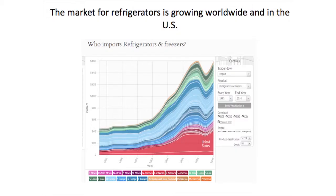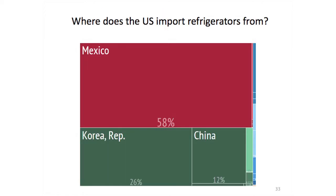That's an interesting industry for Guatemala because it can help them move up. The freezer market is growing, and the U.S. — a neighbor — is the biggest and also growing market. We can even understand where the U.S. imports its refrigerators and freezers from: Korea, China, a lot from Mexico — maybe there are places where Guatemala can take market share.